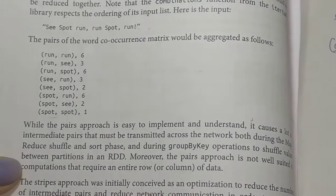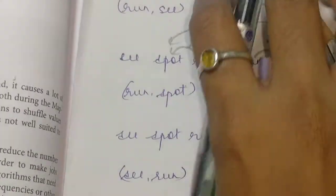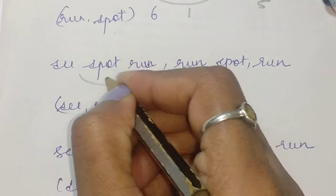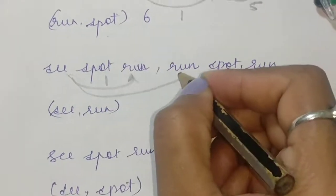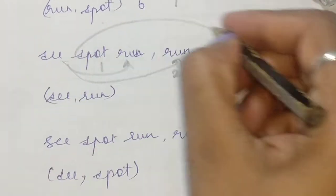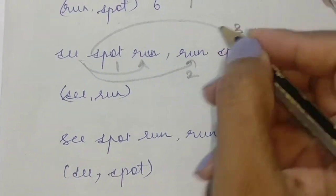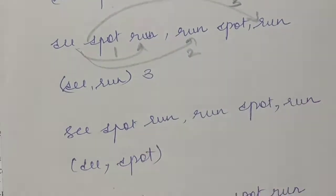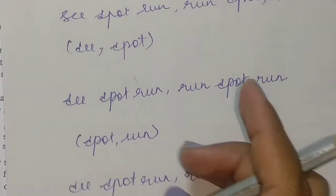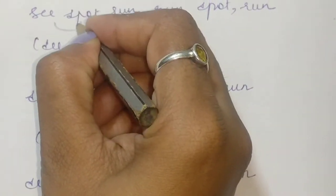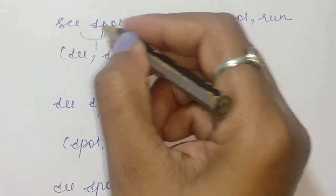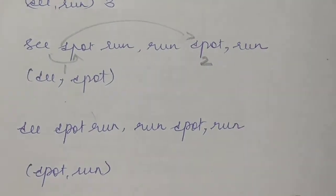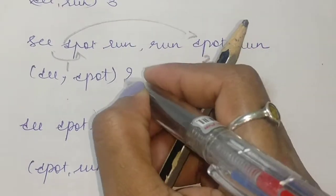Next, see and run: see and run once, see and run twice — so the value is three. Then c and spot: c and spot once, c and spot twice — so it just occurs twice and the value is two.